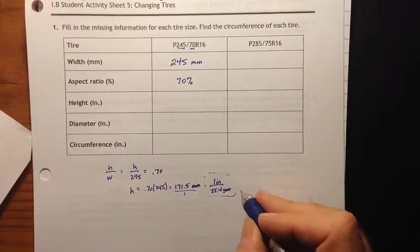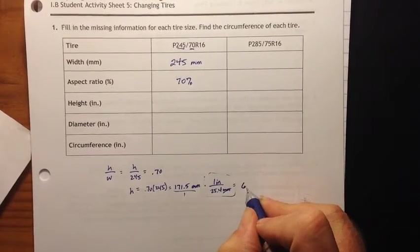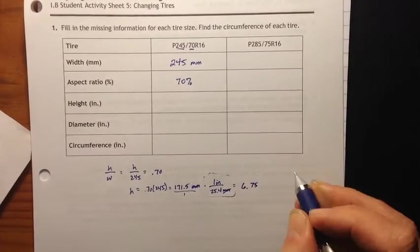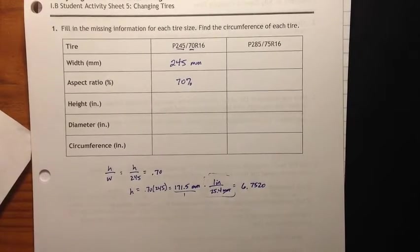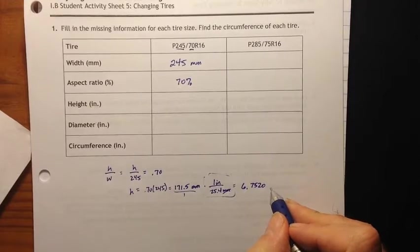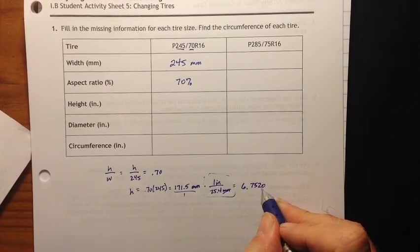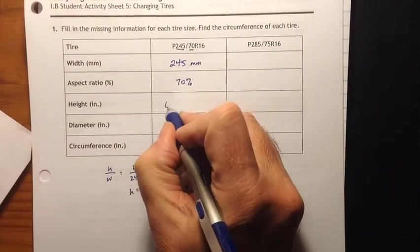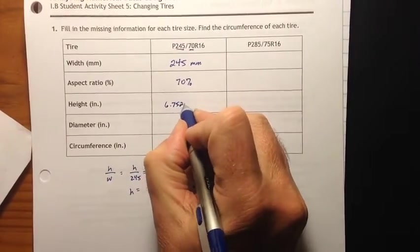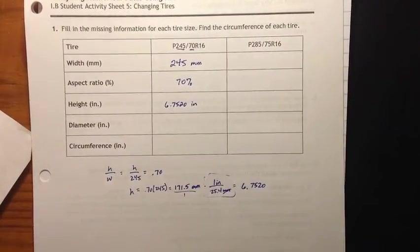And we get that the height is 6.75. And I'm going to round everything to four decimals, because on the key, that's what they do. I don't know why, but that's what they do. 6.75, it was actually 196. So that 196 rounds up to 20 here. 6.7520 inches.